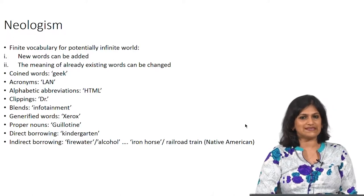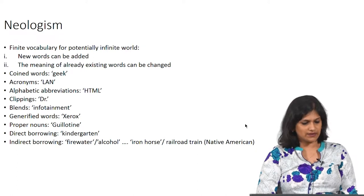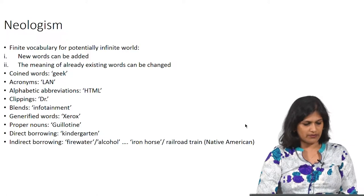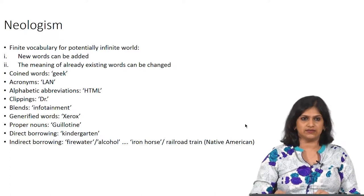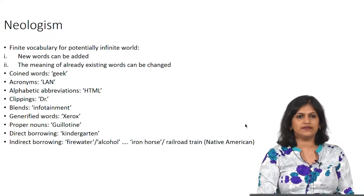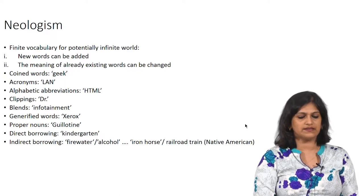So 'geek' is a word which was not part of the English lexicon before; it is a new word introduced to the English lexicon in the late 18th century. These words like 'geek' — describing someone less attractive, only into reading books and academic stuff, not socializing — have been recently added to the lexicon. Then there is another way new words are formed: acronymization.